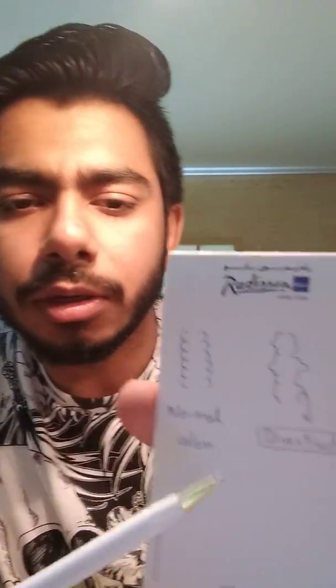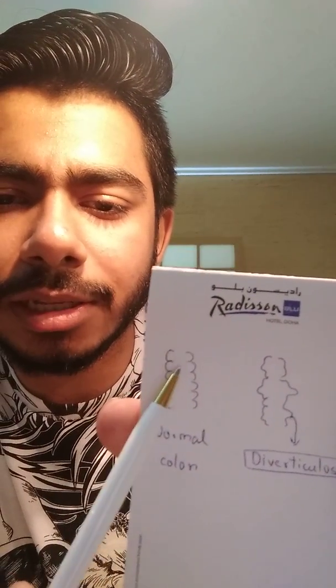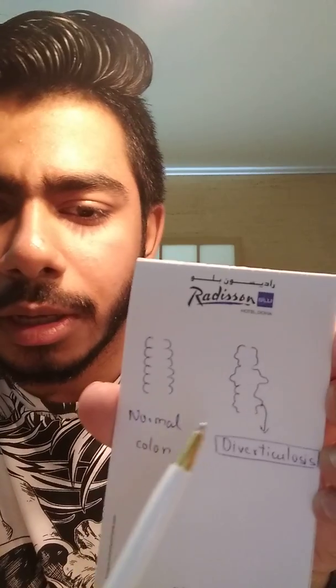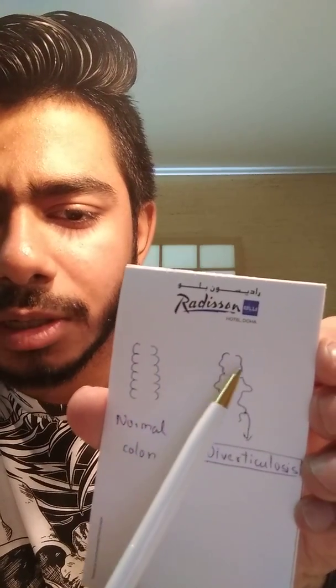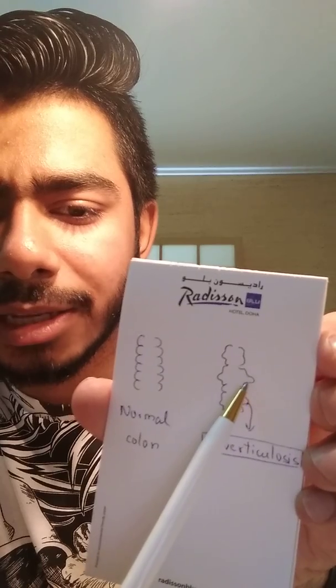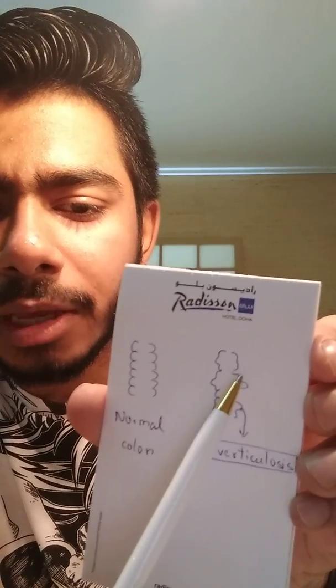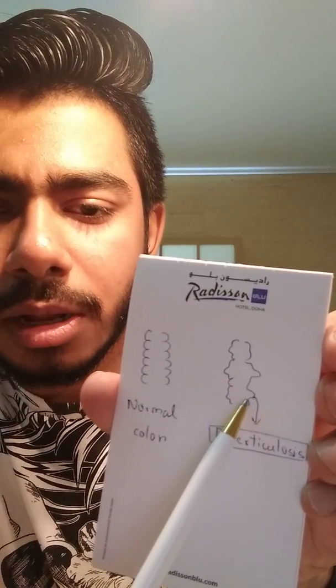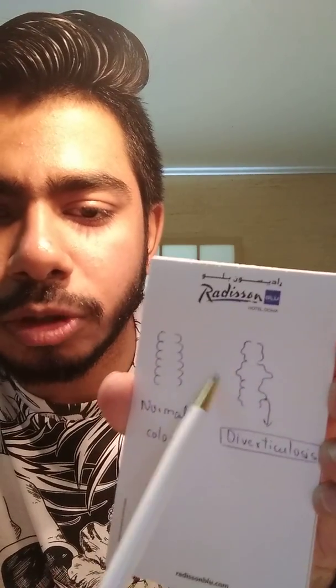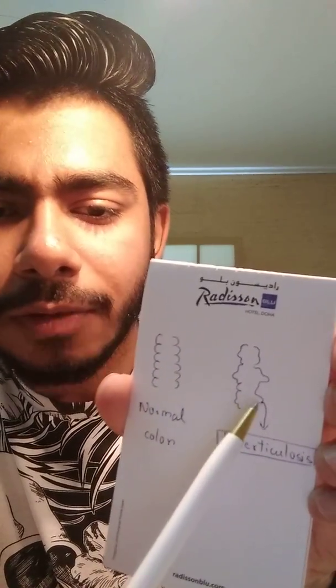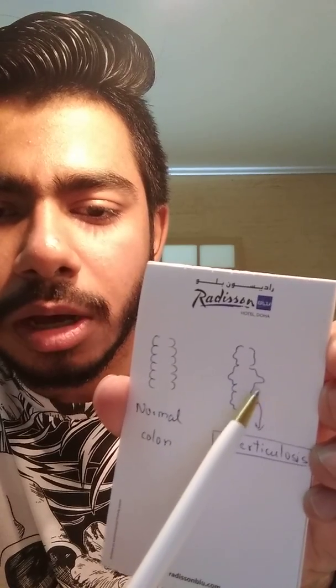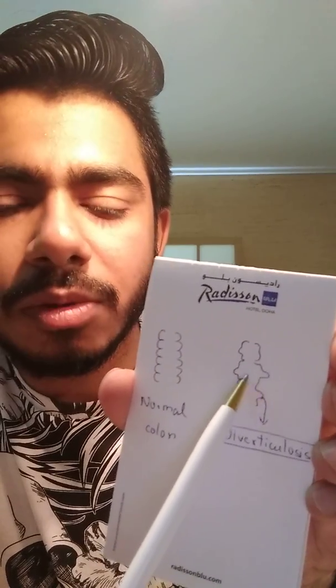I'll try to show you this situation with the help of a diagram. Over here I drew a very simple diagram — this is the sigmoid colon. This is the normal colon, and this one is the diverticulosis situation. Multiple sac-like protrusions are coming out. If only one single protrusion is coming out, we call it a diverticulum; if multiple are coming out, we call them diverticula. This whole situation is called diverticulosis, and if the diverticula get inflammation, it is called diverticulitis.